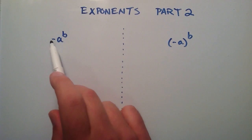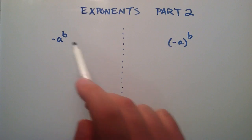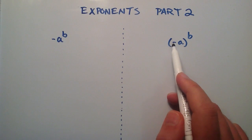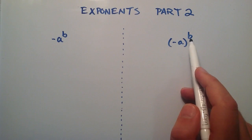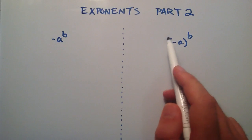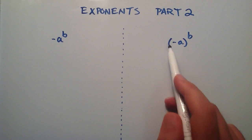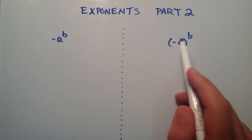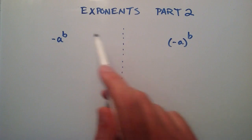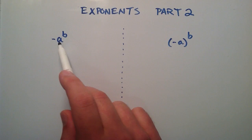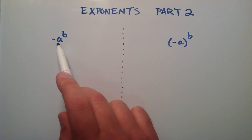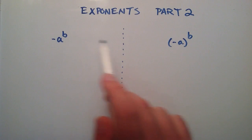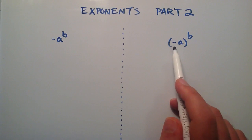We have an expression here that says negative a to the b power, and over here we have negative a to the b power. But the subtle difference is that negative a is inside parentheses on this side, and it isn't on this side. So what difference does that make?